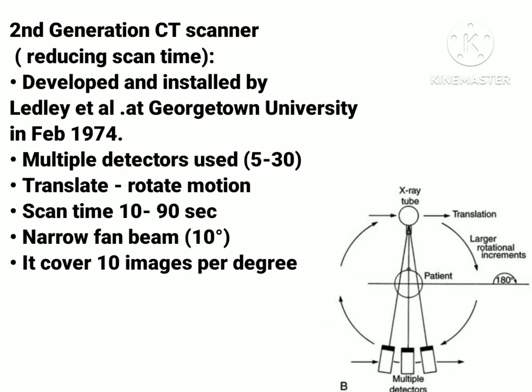Moving forward, a step towards reducing scan time was taken with the introduction of the second generation CT scanner in late 1974. The first waterless full-body CT scanner was developed and installed by Ledley at Georgetown University in February 1974. In this CT scanner, multiple narrow beams and multiple detectors were used — approximately five to thirty detectors. The rotation of the X-ray tube and detectors was translate-rotate motion. Scanning time was 10 to 90 seconds.